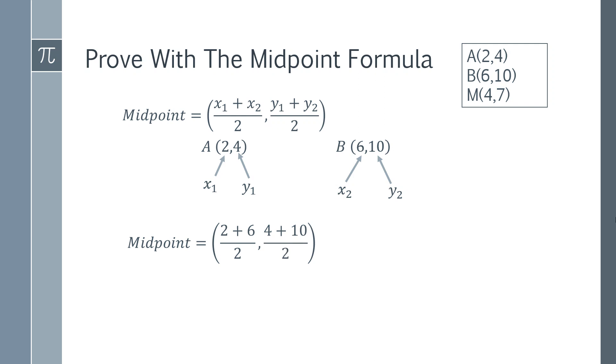If you put each of these in the calculator separately, so you did 2 plus 6 divided by 2 that would give you 4, and then likewise the calculation after the comma would give you a 7. And when you look at this you go hang on, we've got the 4 and we've got the 7 that matches up with our point M.